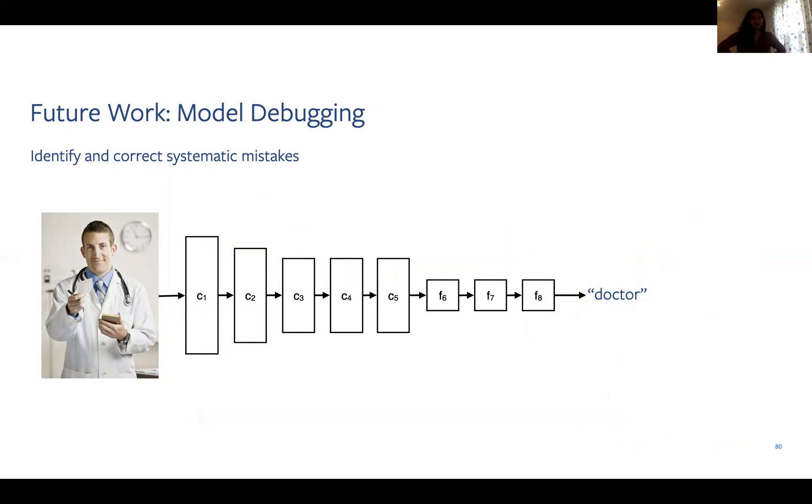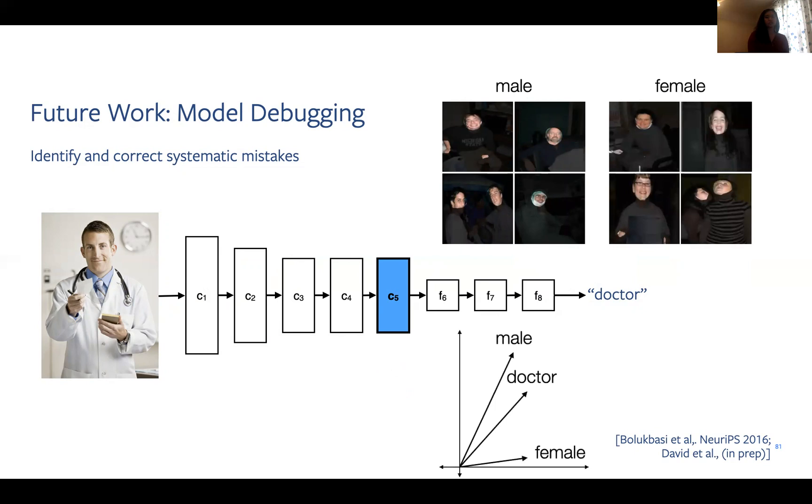Now to talk about some future work. For most of this talk, I've highlighted our work on understanding model behavior. The tools I've introduced can allow us to identify systematic mistakes made by a network. These insights can then be used to fix networks themselves. Consider this doctor example again. Suppose our attribution method highlights that this model relies on spurious cues included in the face, such as gender or race, to make its prediction. We could then retrain the network to base its decision on other input features and check that it indeed relies on what we consider the causal cue, in this case the stethoscope. We can also correct the internal representation of a network to either not rely on the male concept for its prediction or by de-biasing the doctor concept with respect to gender, such that the distances from the male and female concept are the same. Related work like this has been done for word embeddings in natural language.